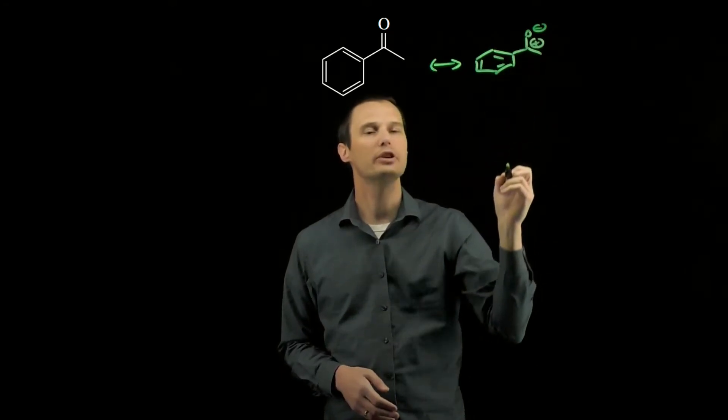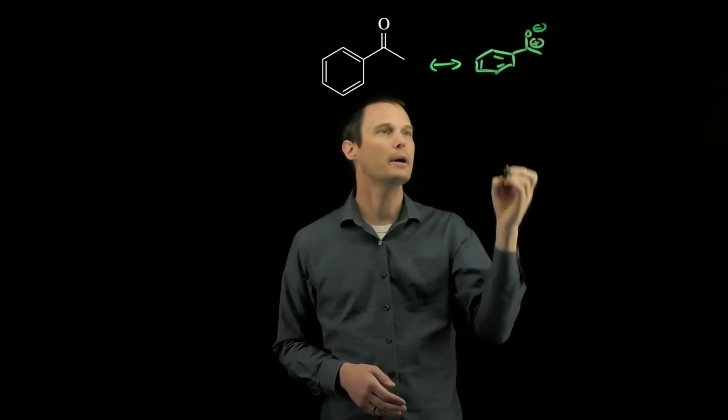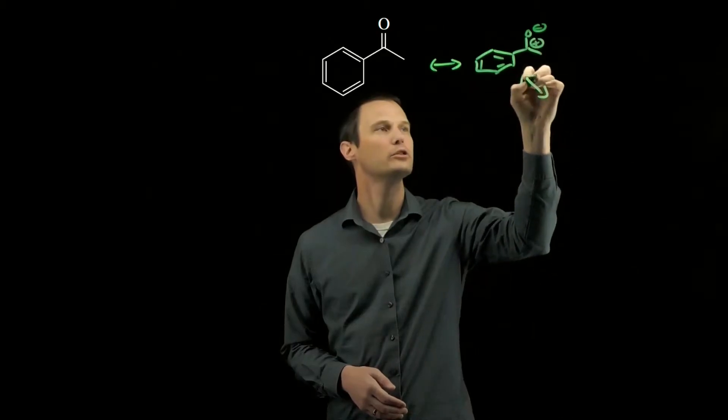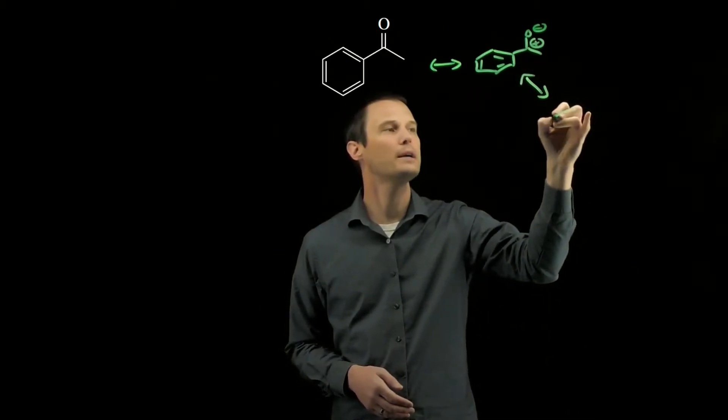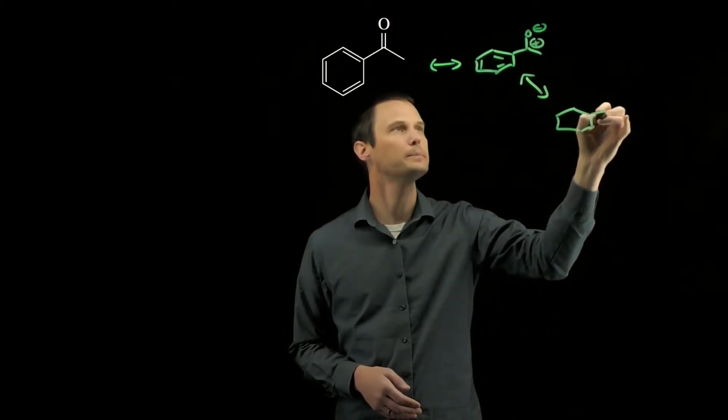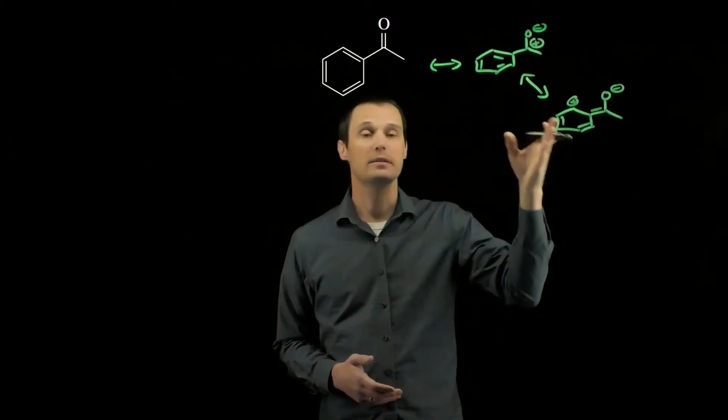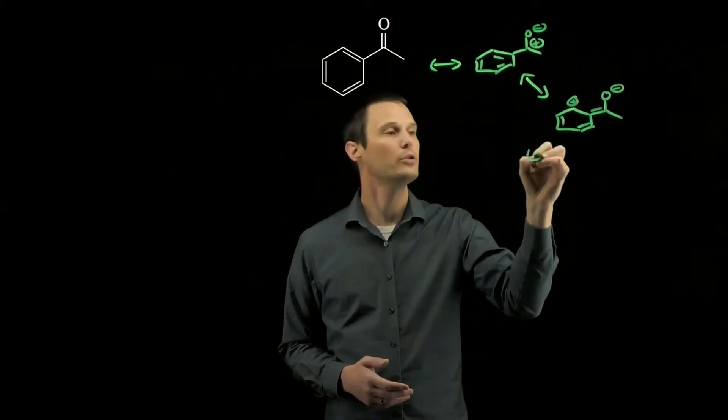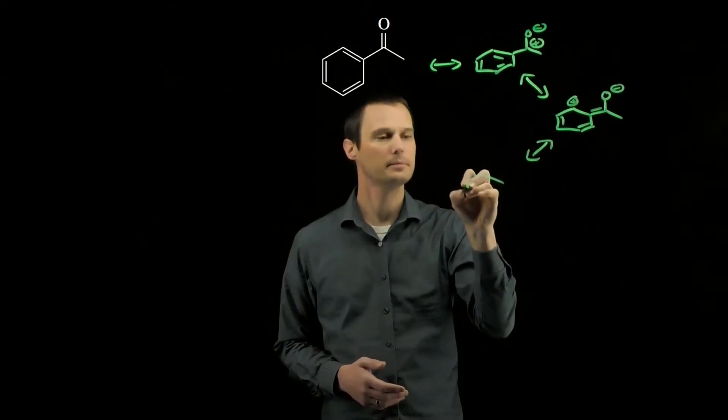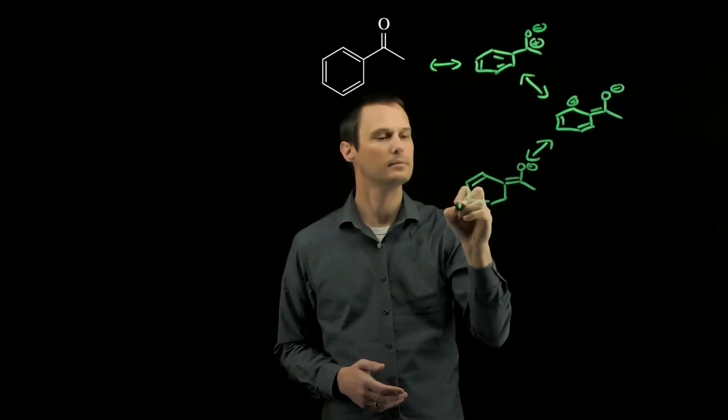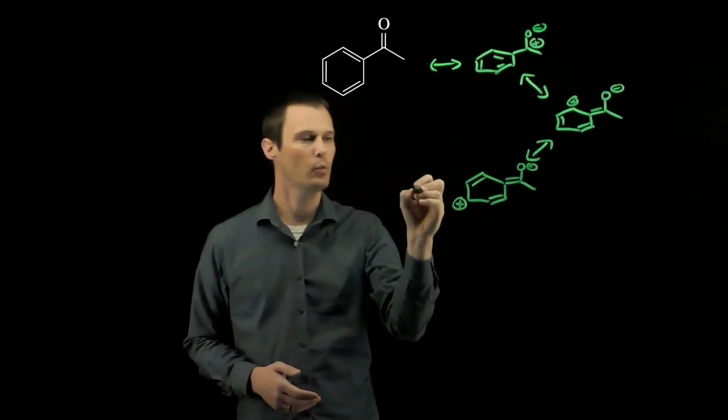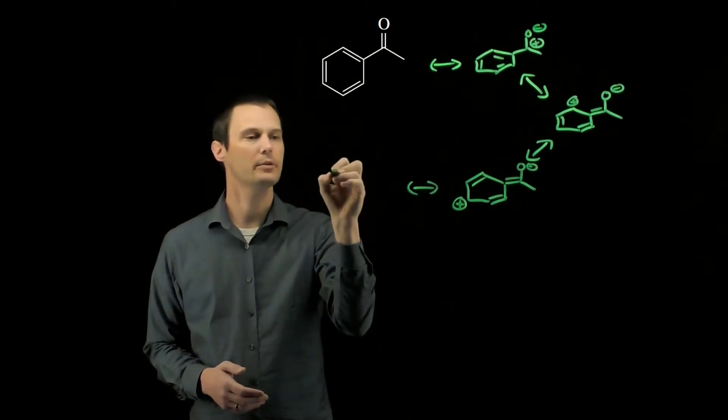This positive charge is now adjacent to a carbon-carbon pi bond, so we can draw a resonance contributor where we distribute the positive charge into the benzene ring. This positive charge can then continue throughout the benzene ring. And we have one more resonance contributor within the benzene ring.